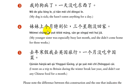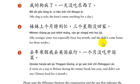So: 妹妹上个月特别忙，三个星期没回家. My sister was especially busy last month and she didn't come home for three weeks. Notice again — in English the grammar changes: 'she didn't come home' versus 'I haven't had a checkup.' But in Chinese it's consistently this same structure.